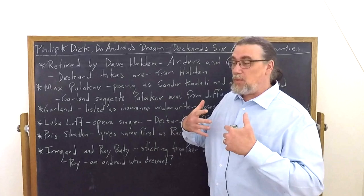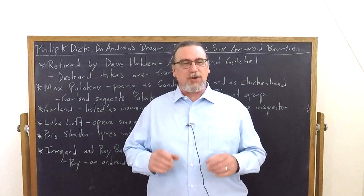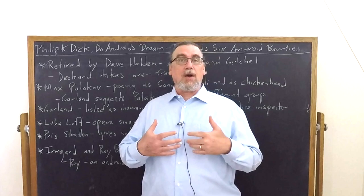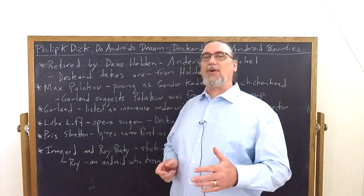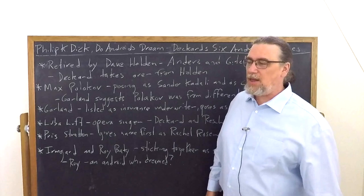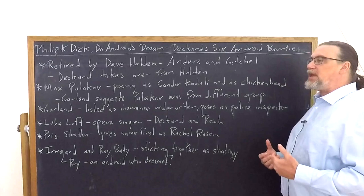So what's going on here? Deckard is a bounty hunter. He gets paid. His entire job is hunting down androids who are becoming more and more sophisticated in passing themselves off as humans. They're not supposed to be on Earth, but they come back in part because they want to get away from their bad lives out in the colonies, where they are at best very valued tools and at worst slave labor.